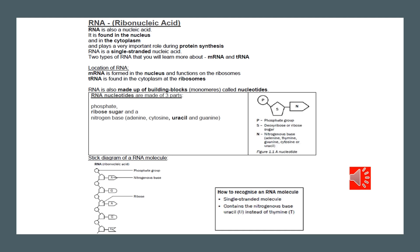The two types of RNA you will learn about are messenger RNA (mRNA) and transfer RNA (tRNA). These play a huge role in protein synthesis. mRNA carries the genetic code from DNA in the nucleus to the ribosomes in the cytoplasm and therefore acts as a messenger. tRNA picks up amino acids in the cytoplasm and takes them to the ribosomes where protein synthesis occurs, acting as a transfer molecule. You must also be able to recognize and label a diagram of these molecules.